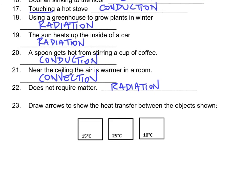The last heat transfer question asks us to draw arrows showing heat transfer between three objects. Remember: heat always travels from hot objects to cold objects. Of the three objects at 15°C, 25°C, and 10°C, the hottest is 25°C. So heat energy transfers from the 25°C block to both the 15°C block and the 10°C block.